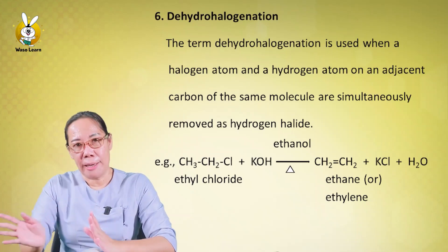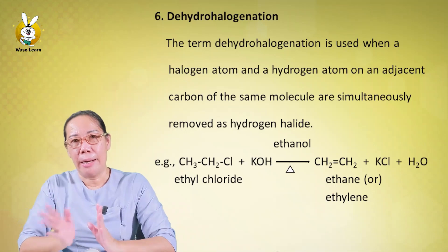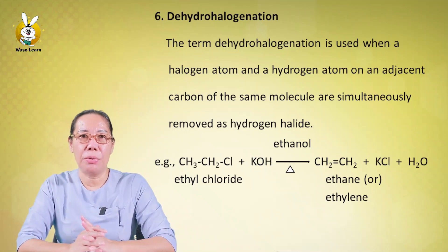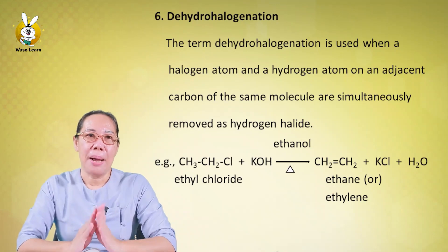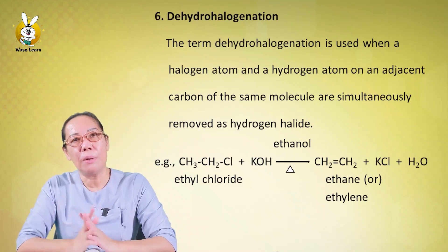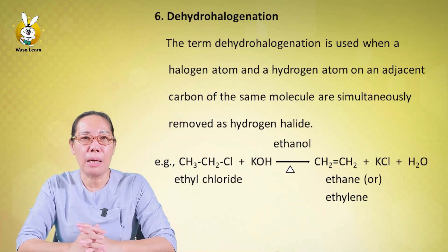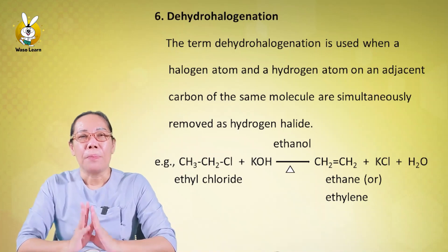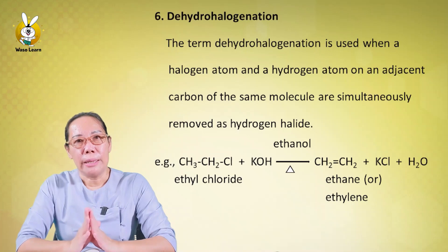In dehydrohalogenation, the result is CH2=CH2. A single bond is converted to a double bond through this elimination process.